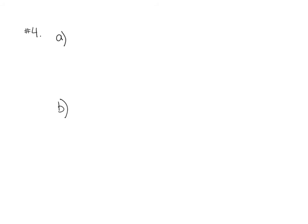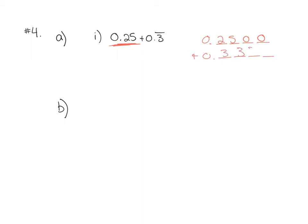Question 4 gives us two ways to add or subtract. Part A is to line up the decimals. Our first set of numbers is 0.25 plus 0.3 repeating. I can rewrite 0.25 as 0.2500 and 0.3 repeating as 0.3333. Adding them together: 0 plus 3 is 3, 0 plus 3 is 3, 5 plus 3 is 8, 2 plus 3 is 5, and 0 plus 0 is 0. We can rewrite this as 0.583̄ — the 58 don't change, but the 3 keeps repeating.